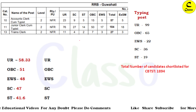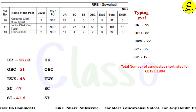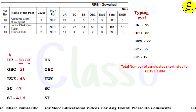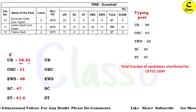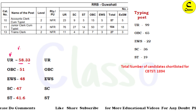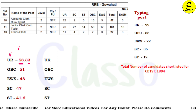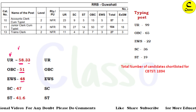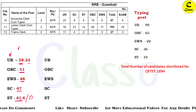Everyone has been waiting a long time for this analysis. The first cut-off — the UR cut-off — was 58.33. The cut-off was already low because the exam was almost 2 months late and the questions were tough. UR cut-off was 58.33, OBC was 51, EWS was 48, SC was 47, and ST was 41 — out of 120.